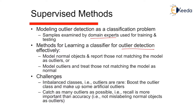Model outliers and treat those not matching the model as a challenge. The challenges we face while working with a supervised model are: 1. Imbalanced classes, i.e., outliers are rare. Boost the outlier class and make up some artificial outliers. Catch as many outliers as possible, i.e., recall is more important than accuracy, i.e., not mislabeling normal objects as an outlier.